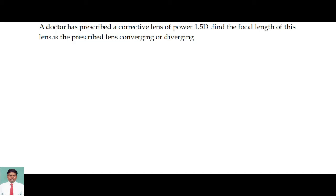A doctor has prescribed a corrective lens of power plus 1.5 diopter. Find the focal length of this lens. Is the prescribed lens diverging or converging? We'll write the power, that is equal to plus 1.5 diopter.